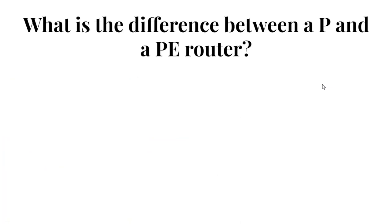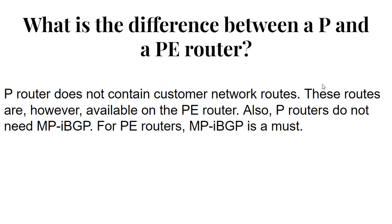Question 4: What is the difference between a P and a PE router? Answer: P routers do not contain Customer Network Routes and do not require Multi-Protocol Border Gateway Protocol. In contrast, PE routers store Customer Network Routes and necessitate Multi-Protocol Border Gateway Protocol for proper functioning.